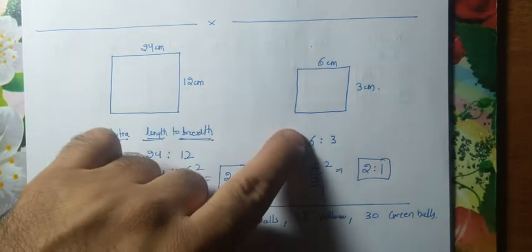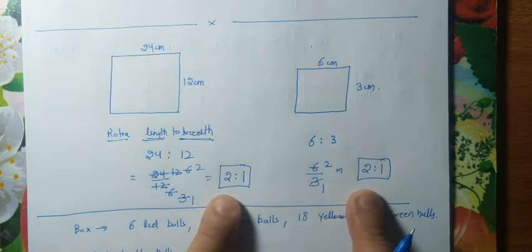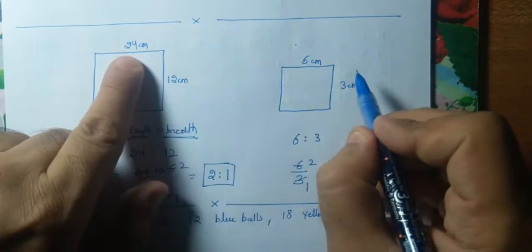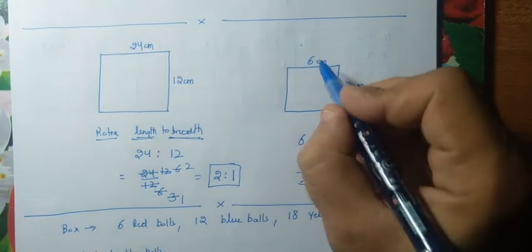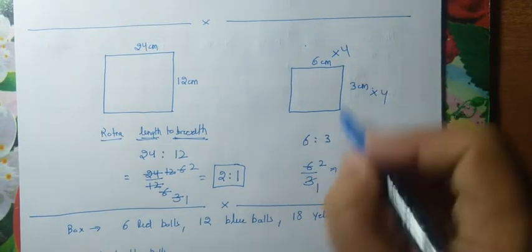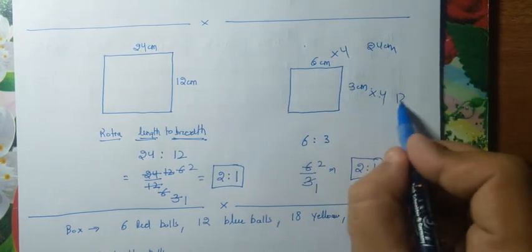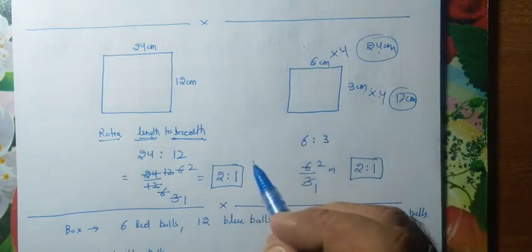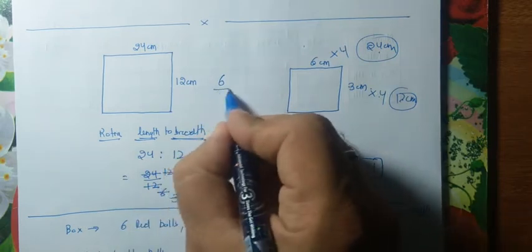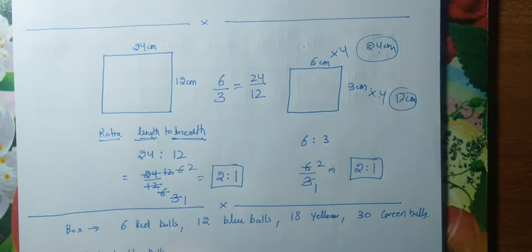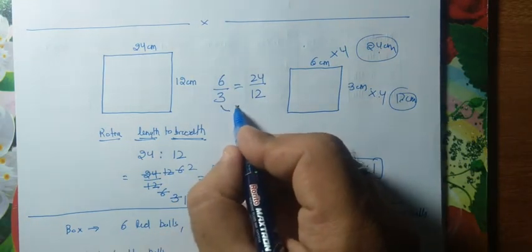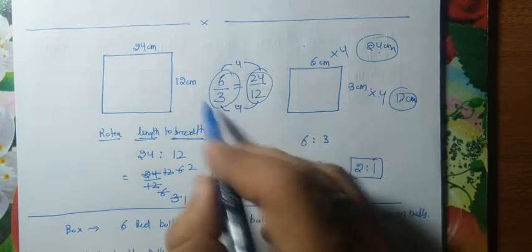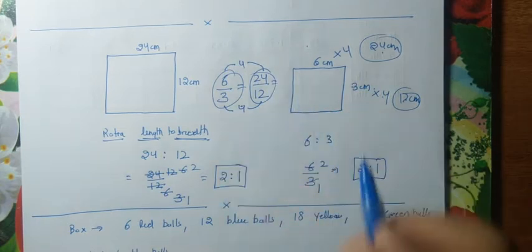Even though the first frame is bigger, when we talk about ratio, both frames have the same length to breadth ratio. This means if I stretch the 6 cm side to 24 cm by multiplying by 4, then the 3 cm breadth becomes 12 cm. So length is 24 and breadth is 12 — which is exactly what we also do in equivalent fractions: 6/3 = 24/12.